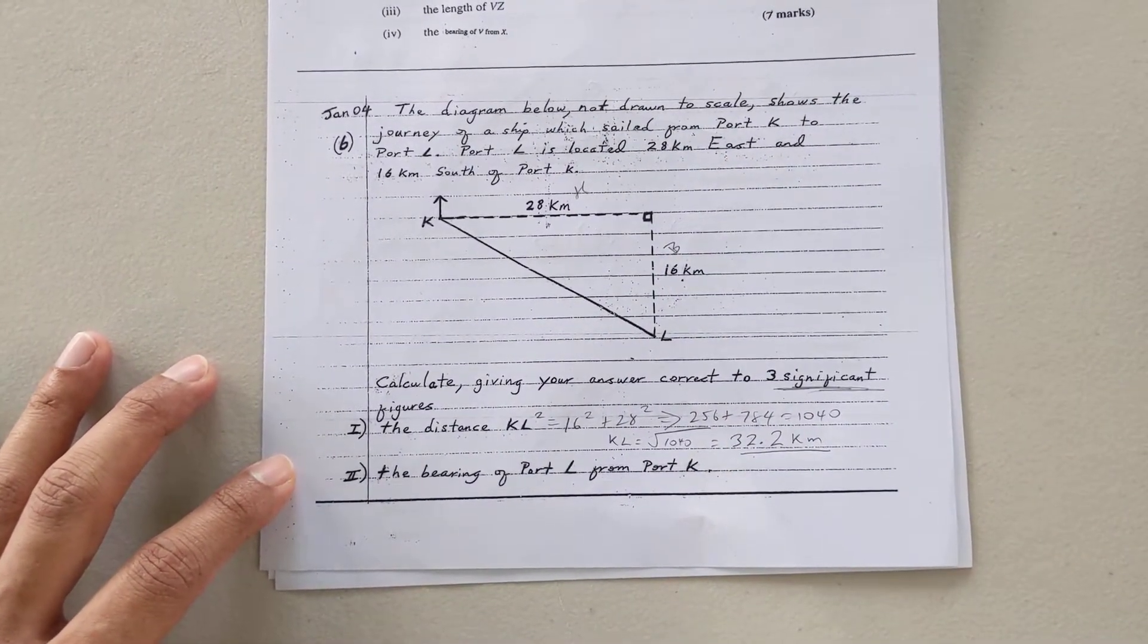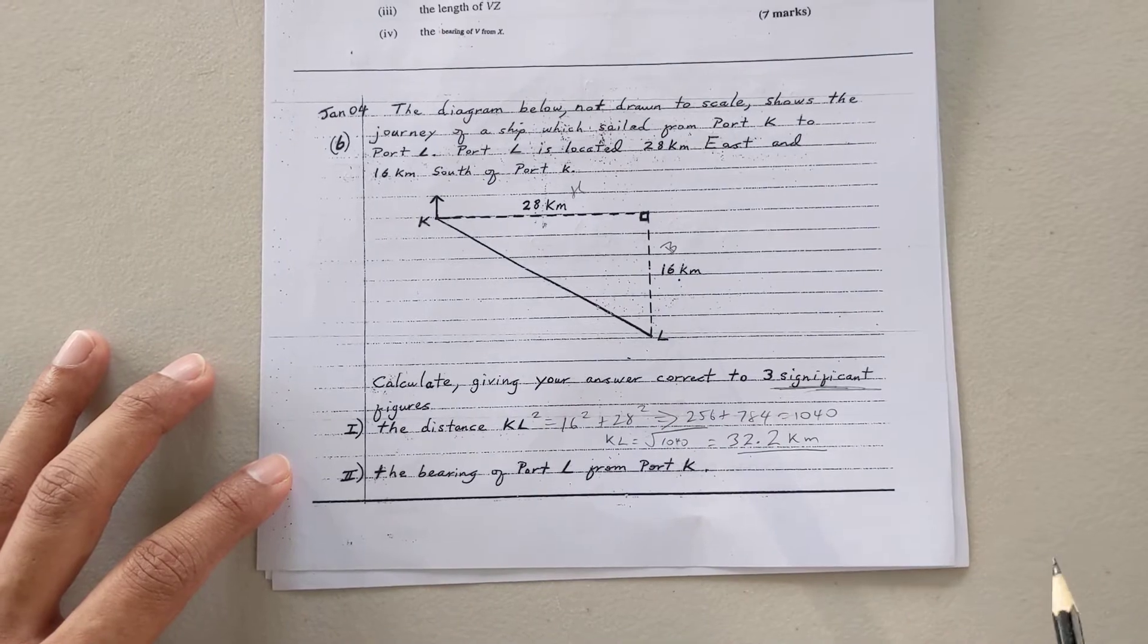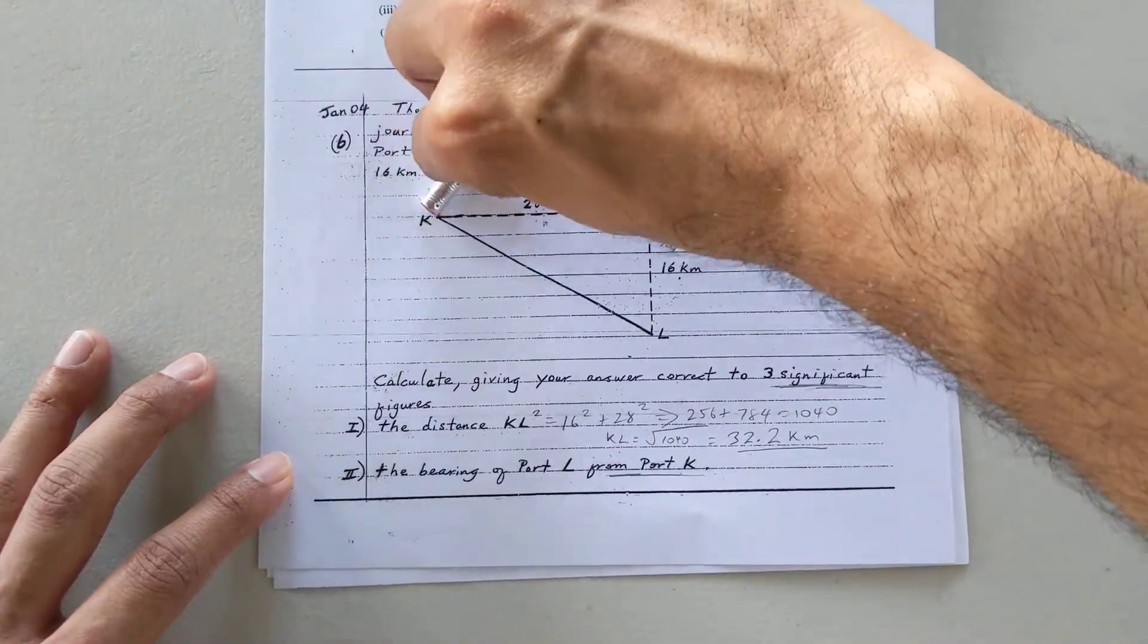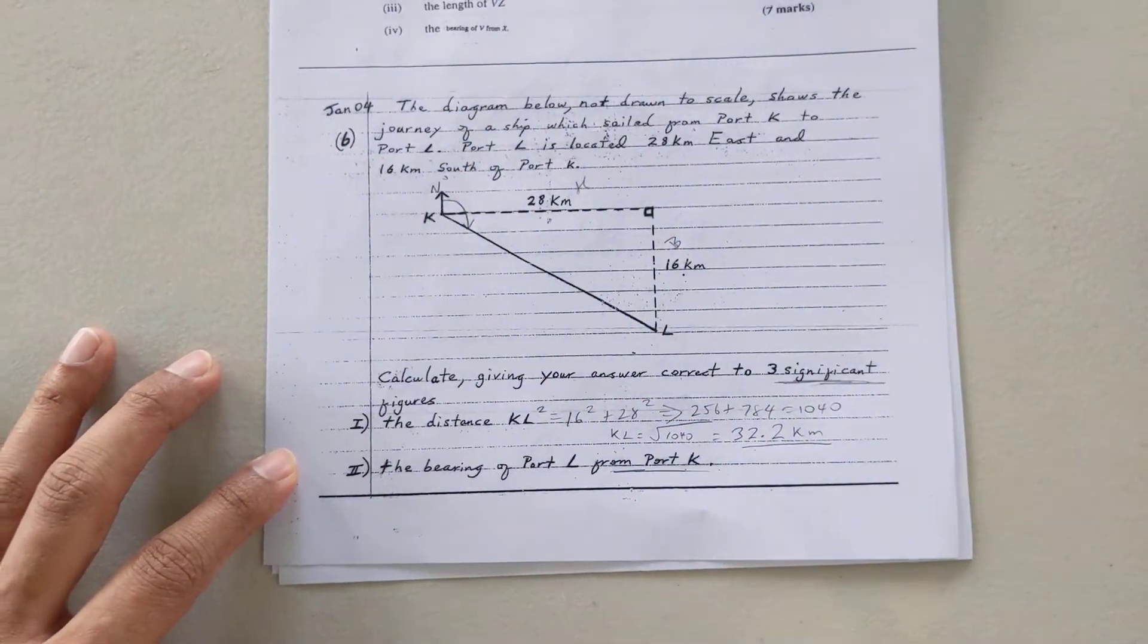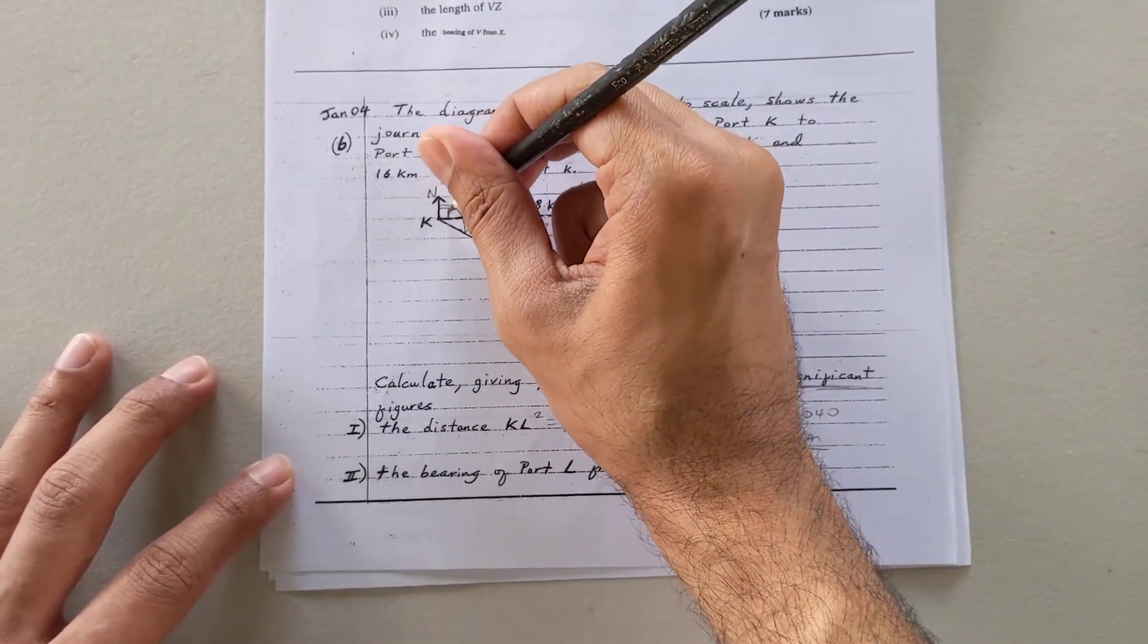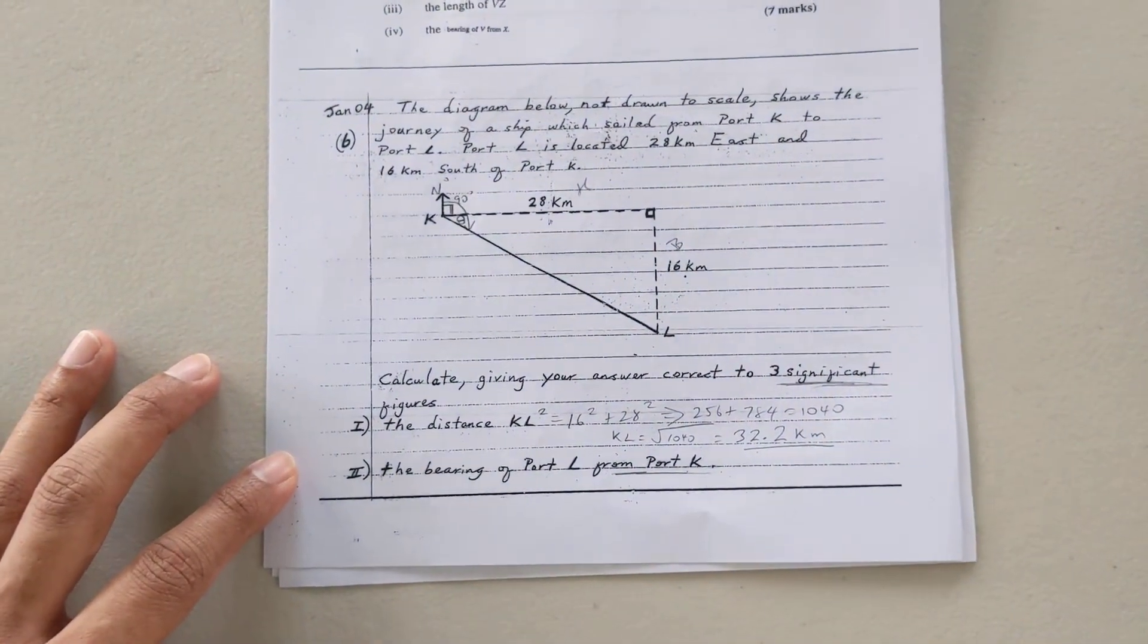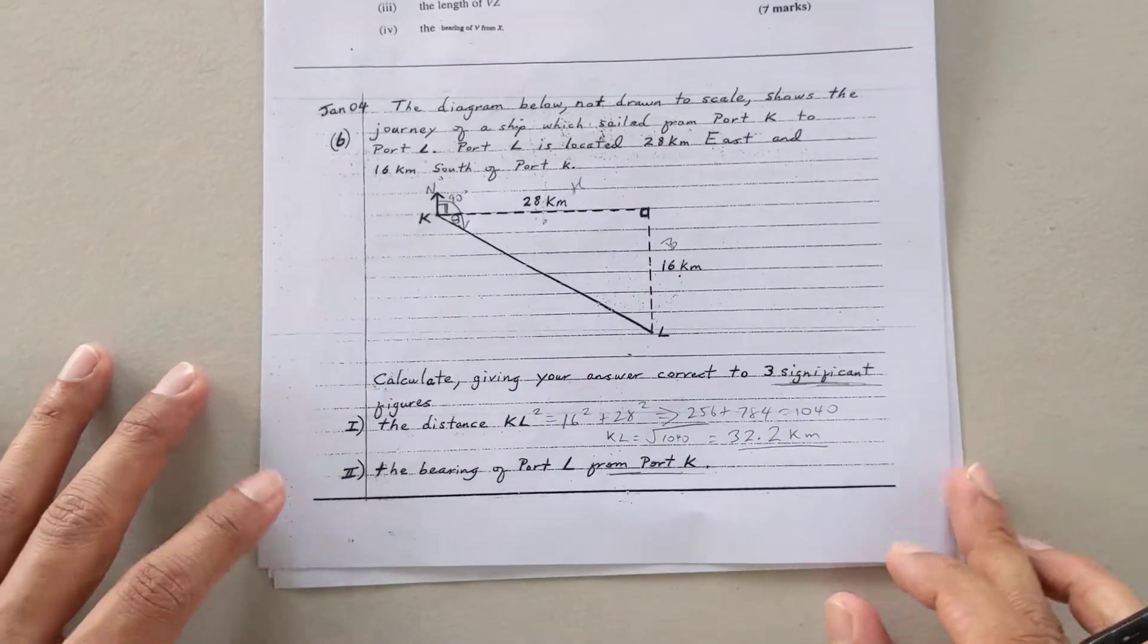The next part is they want the bearing of port L from port K. So which point are we at? We're going from K to L or L to K. So from K means I'm at K. I already have the line from my north line. That's my zero degrees. And I want to turn until I hit the line with L. So I want this big angle here. And if you notice, it's not one angle I want. It's two angles. Straight north, straight east. So this is a 90 degrees angle. So what I really need to figure out is this angle here, and then I can add the 90 to that to get the whole bearing.